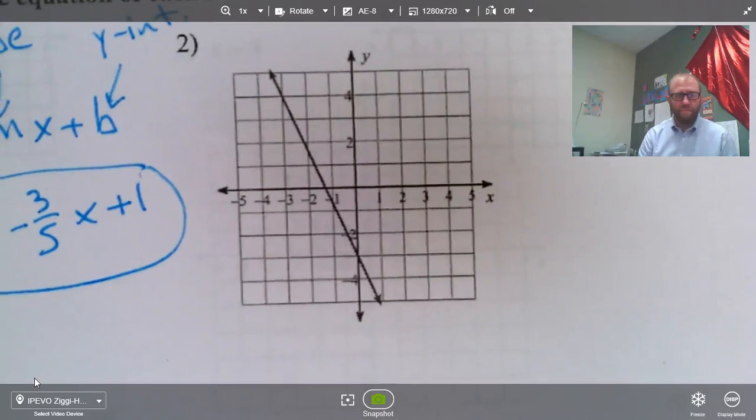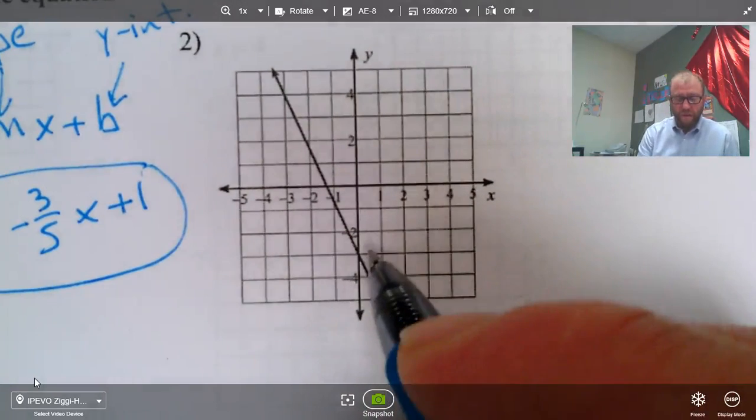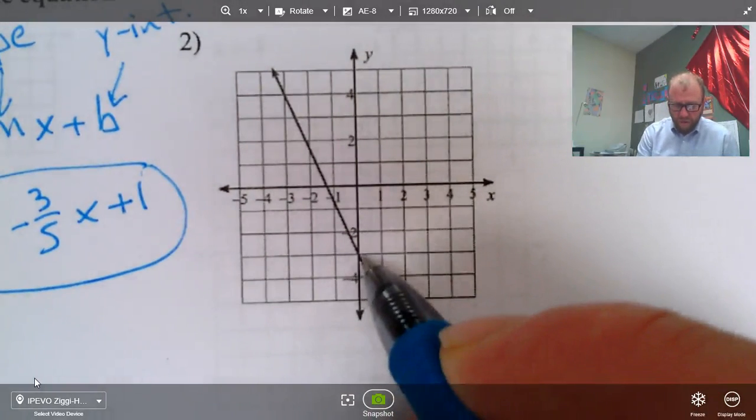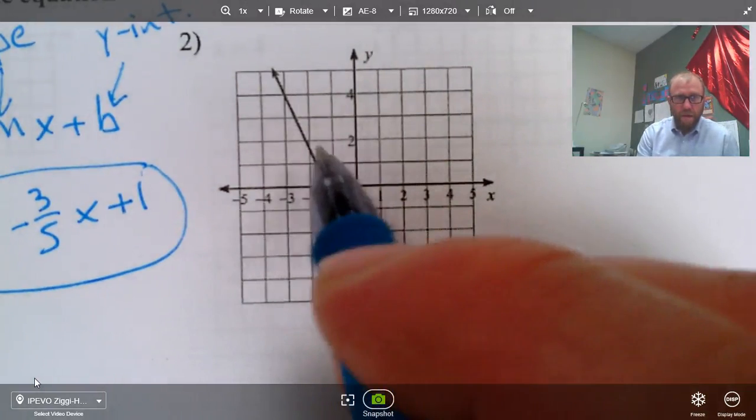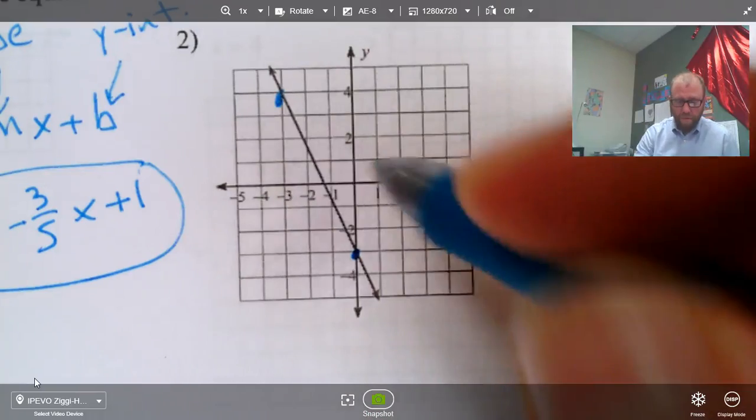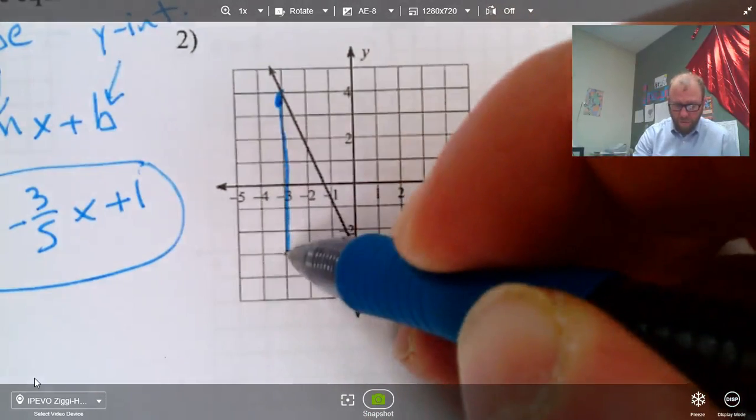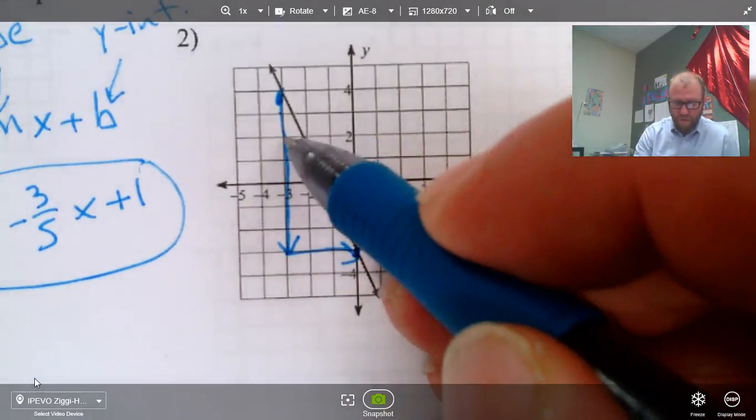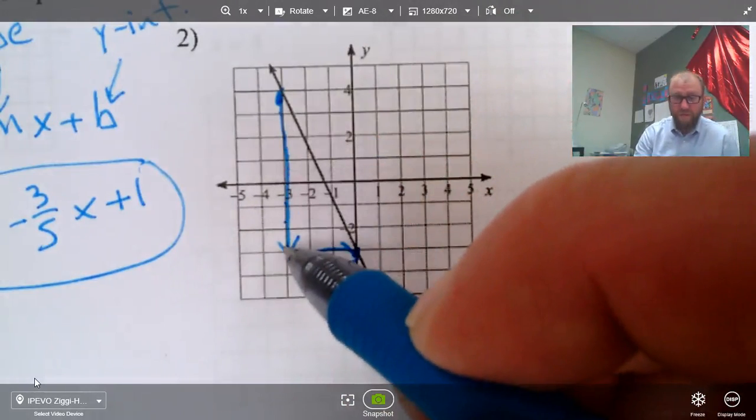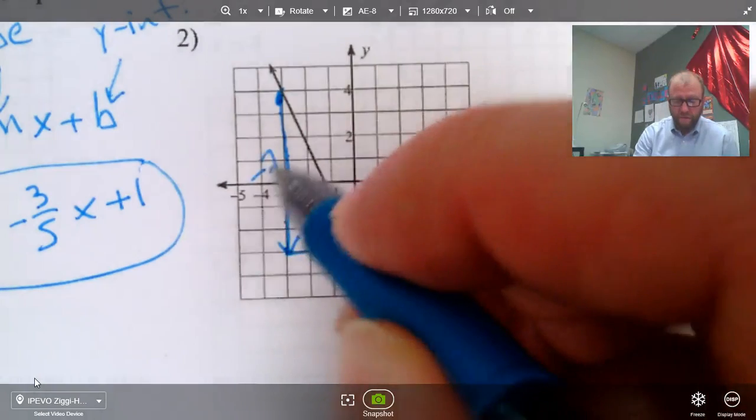All right, next one. Let's see. Here, looks like the line crosses right here, and looks like up here. So, looks like a down, one, two, three, four, five, six, seven, down seven spaces, and forward three.